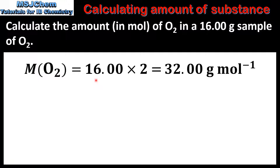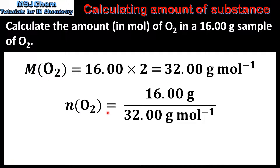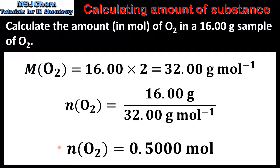Oxygen is a diatomic molecule, therefore we need to multiply the relative atomic mass of oxygen by 2, which gives us a molar mass of 32 grams per mole. In the next step we divide the mass of oxygen by its molar mass: 16 grams divided by 32 grams per mole, which gives us an amount of oxygen of 0.5 moles.